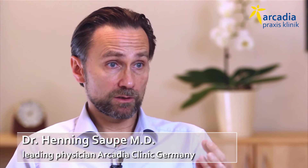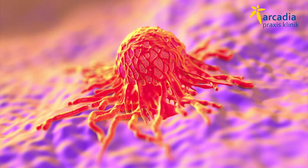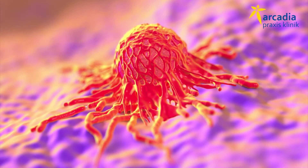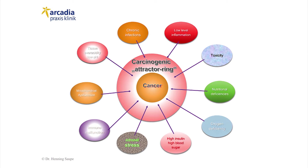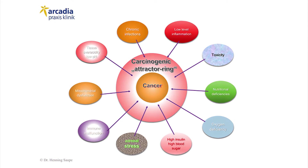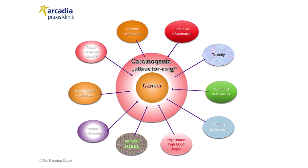Only 5% of the cancerogenic factors for most common cancerous diseases are inherited or based on inherited genetic factors. The other 95% that cause cancer — like breast cancer, colon cancer, lung cancer, and prostate cancer, the four major types of cancer in modern societies — co-work and interact with each other, forming a cancerogenic attractor system.